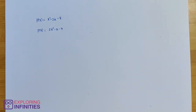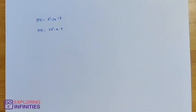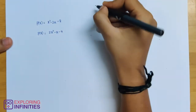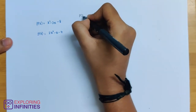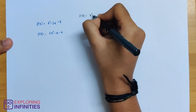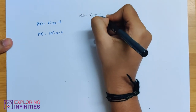Hello everyone and welcome back. In the last video we will solve these two questions: to find the zeros of the polynomial and verify the relationship between zeros and coefficients. First, p of x is equal to x square minus 2x minus 8.